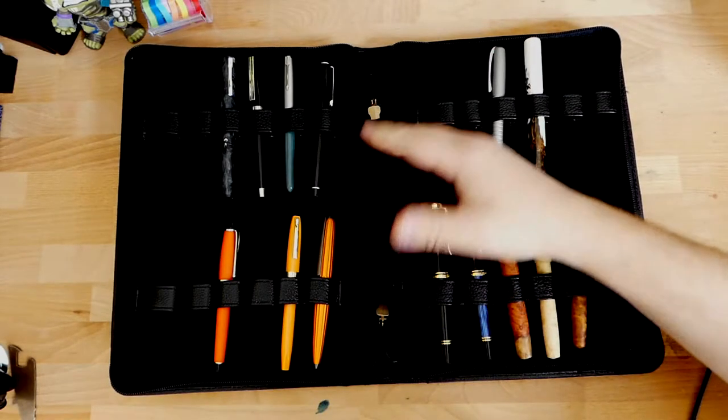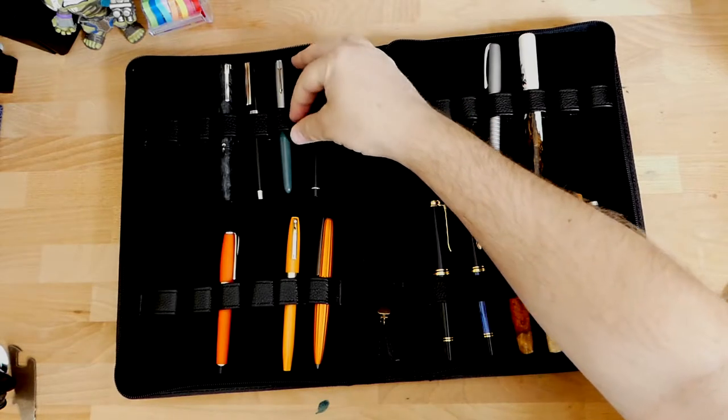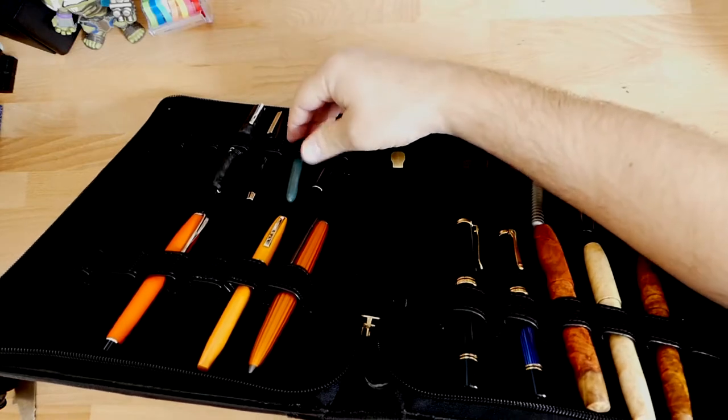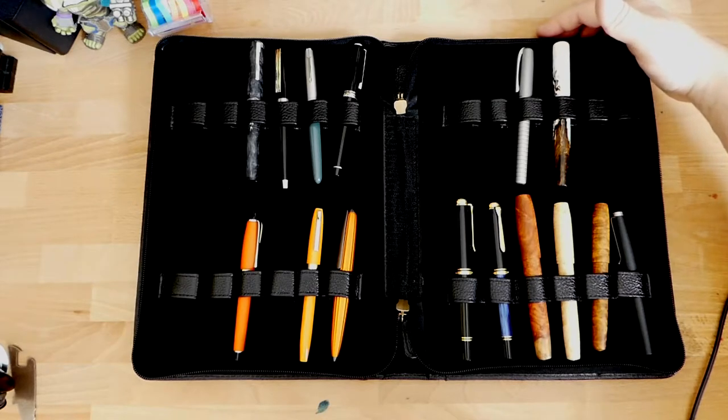So that means that if you have small pens like this Parker 51, there's plenty of room in this loop, which you may or may not be able to see. Plenty of room in this loop above it, but it's being held securely by that little one. So if you have skinny pens, this will hold them.